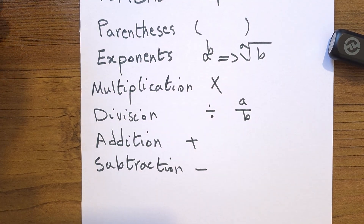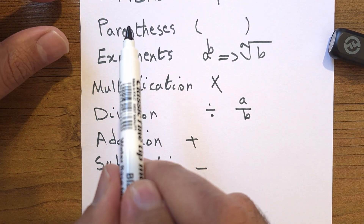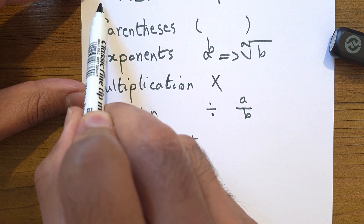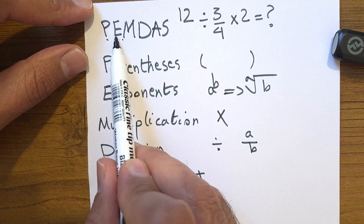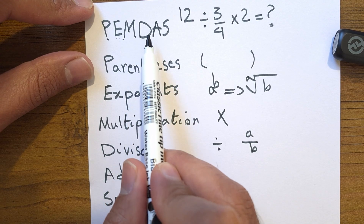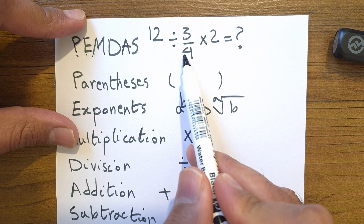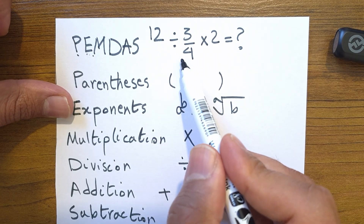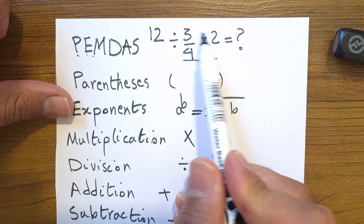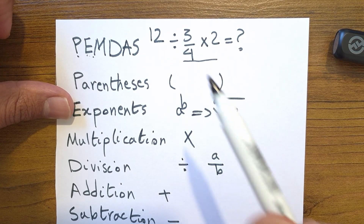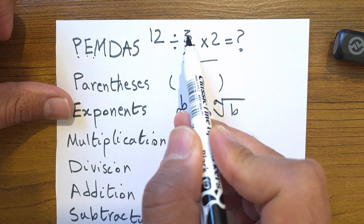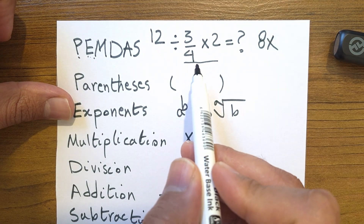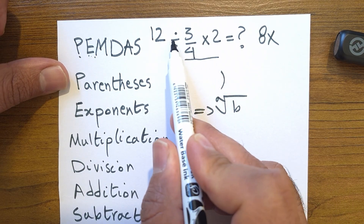One important thing: it does not mean that multiplication comes before division. A lot of students think that if there are no parentheses or exponents, they should do multiplication first, then division. For example, they would say 3 over 4 times 2 equals 3 over 2, so 12 divided by 3 over 2 equals 8. But 8 is not the answer — that student made a mistake by doing multiplication before division.